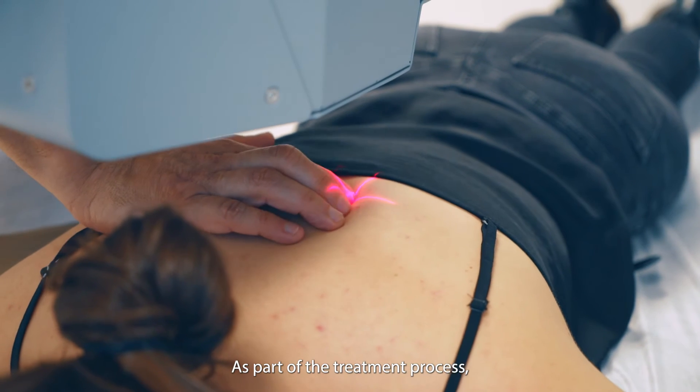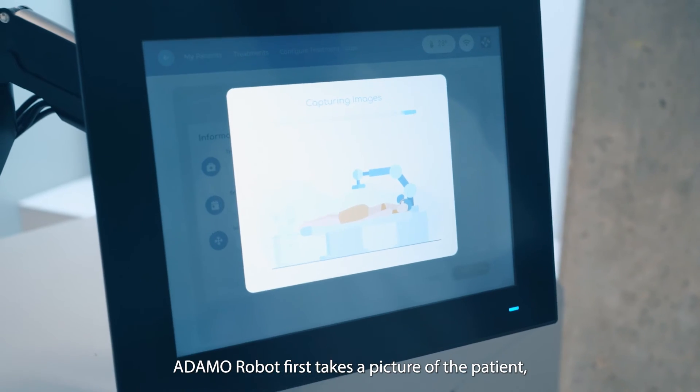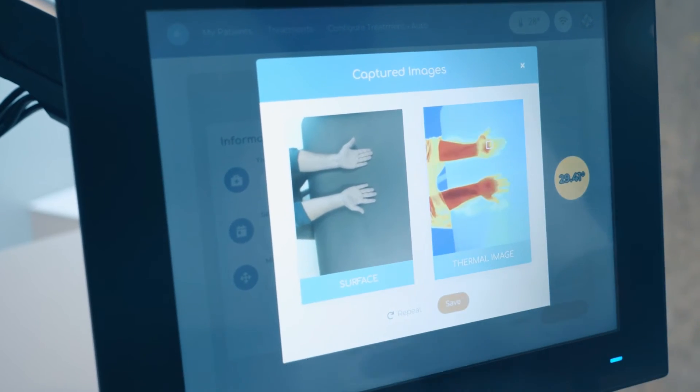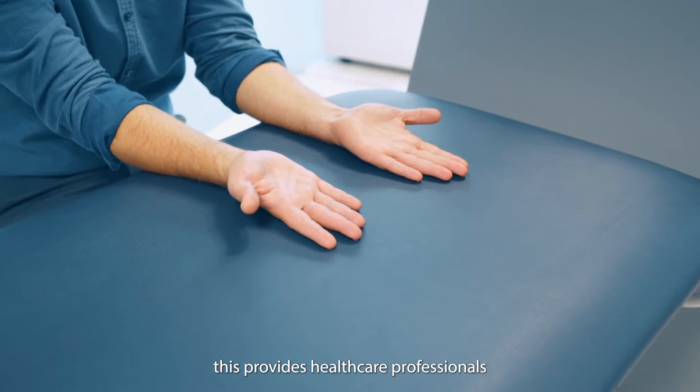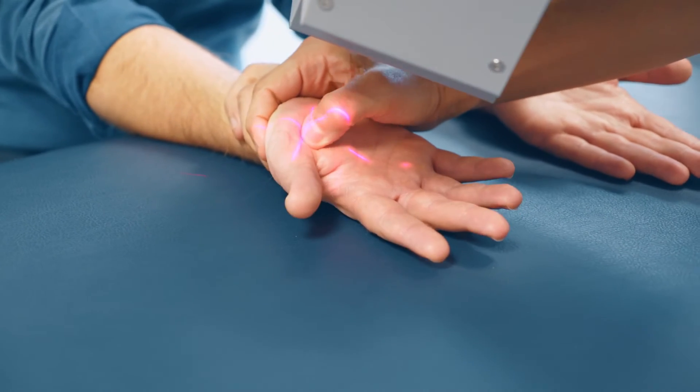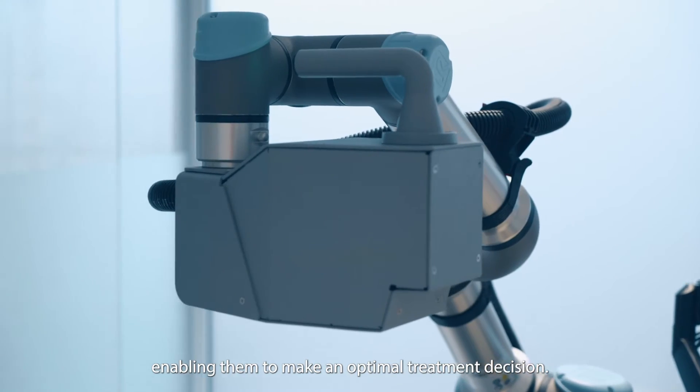As part of the treatment process, Adama robot first takes a picture of the patient using its thermographic camera. This provides healthcare professionals with a thermographic image of the area to be treated, enabling them to make an optimal treatment decision.